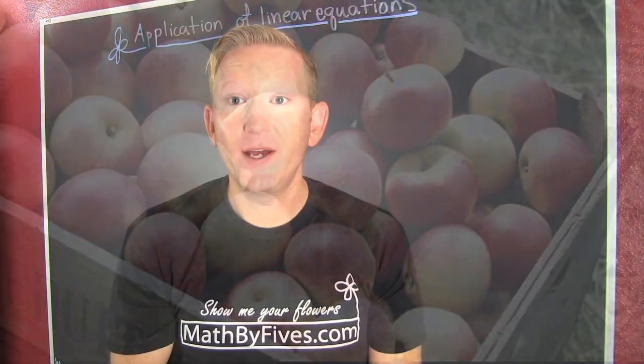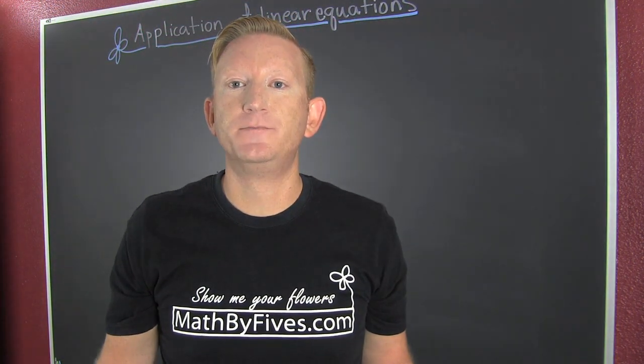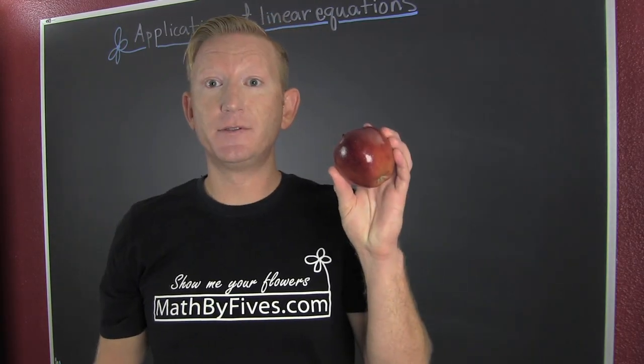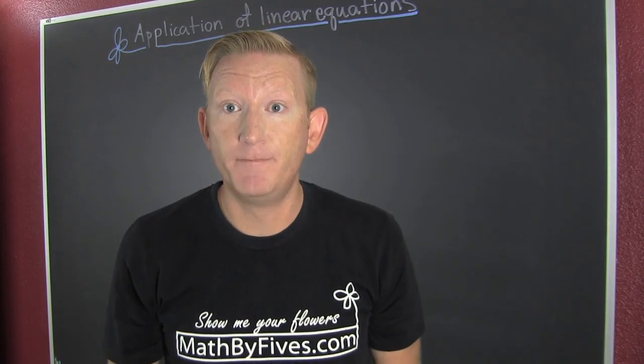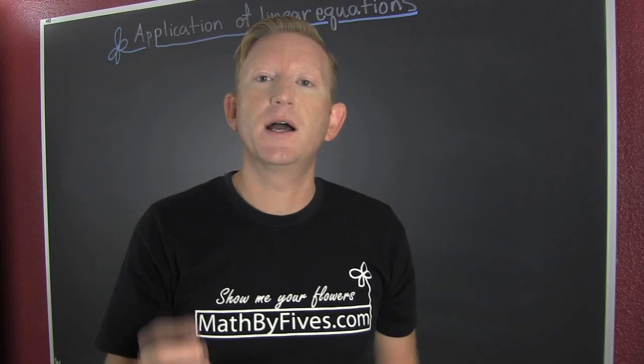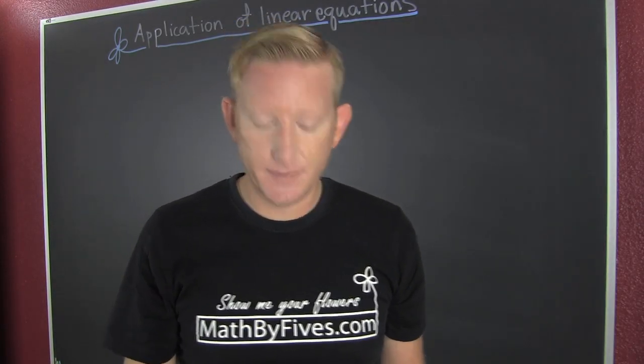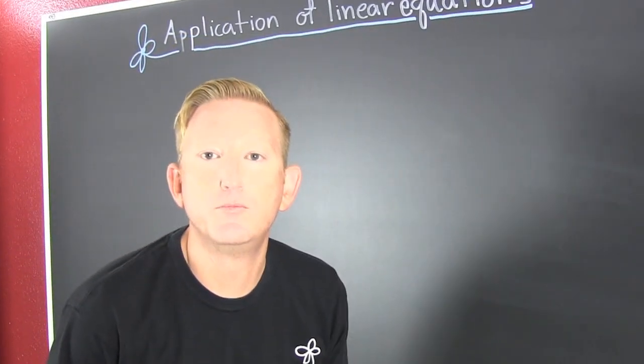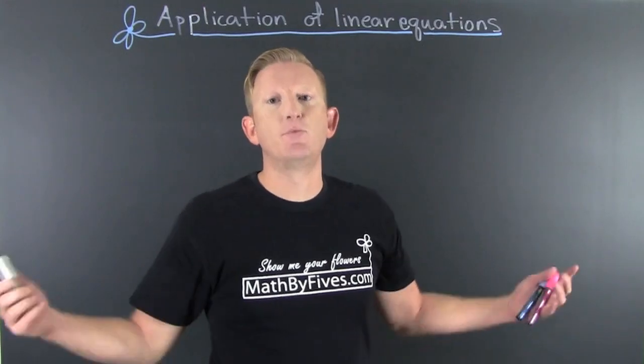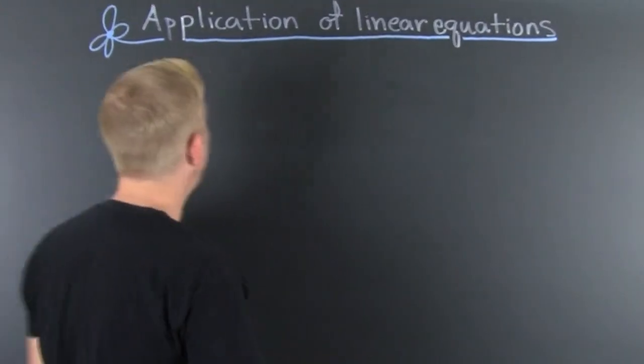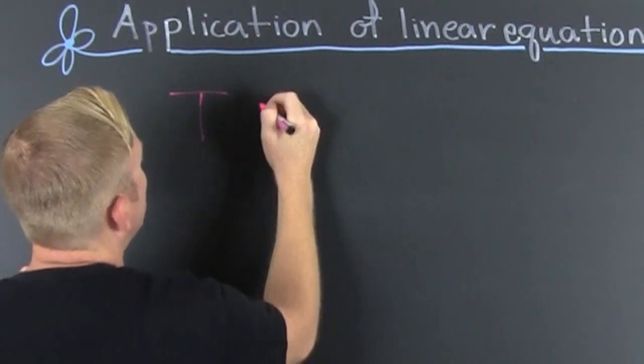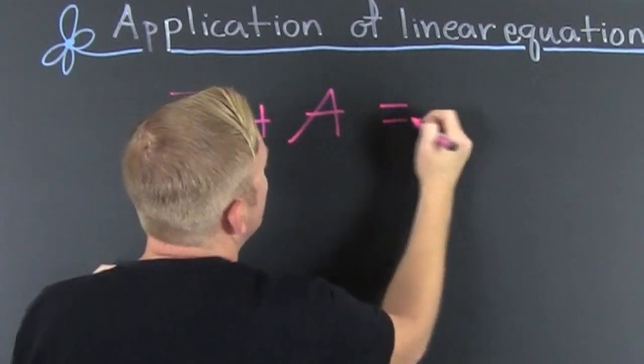So we read the problem. What goes into a taffy apple? Taffy and apples, and maybe a stick, but the problem didn't mention anything about a stick so let's not worry about it. We're talking about the total weight of these taffy apples. What are we going to need? Taffy and apples. When we put them together, we're going to get the total. Taffy plus apples equals the total.